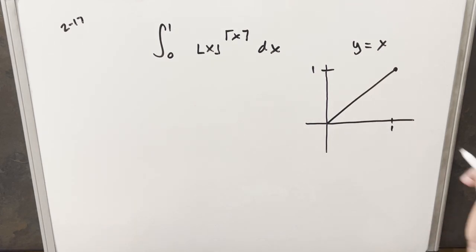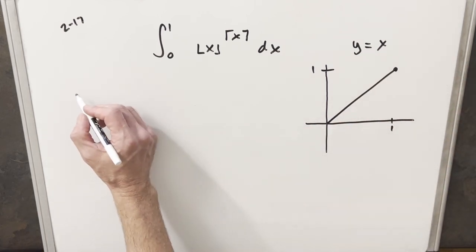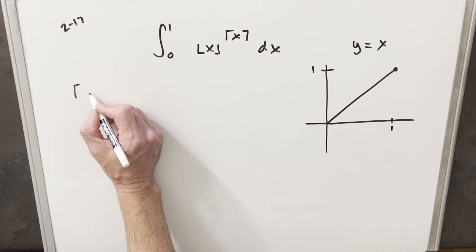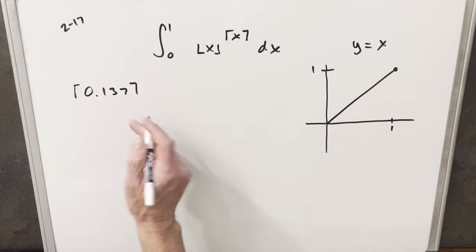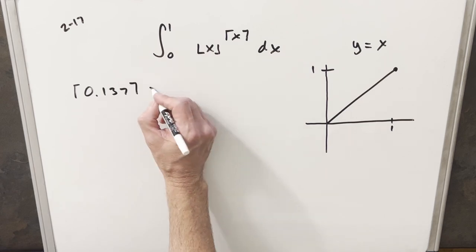For the ceiling, it will round us up. For example, if I look at the ceiling of 0.137, the ceiling will take me up to 1.